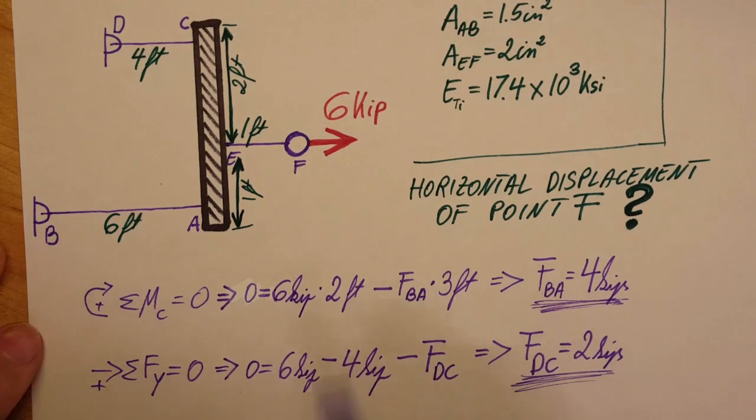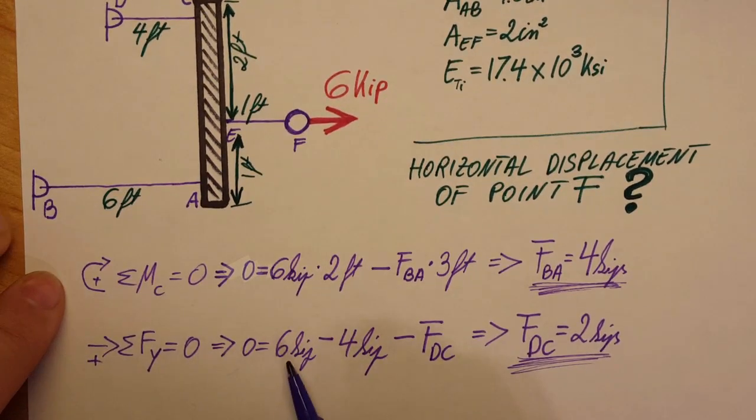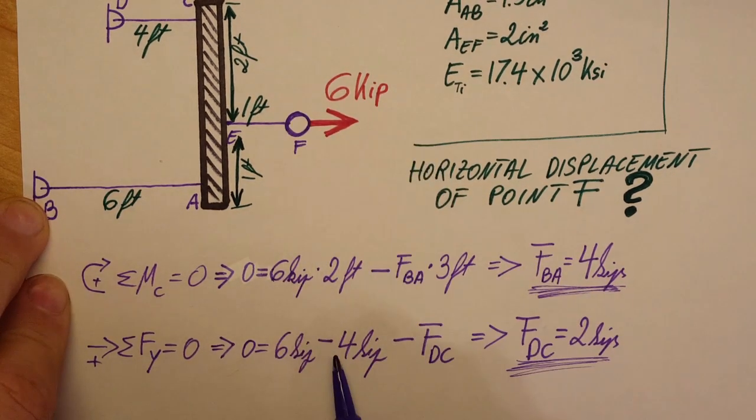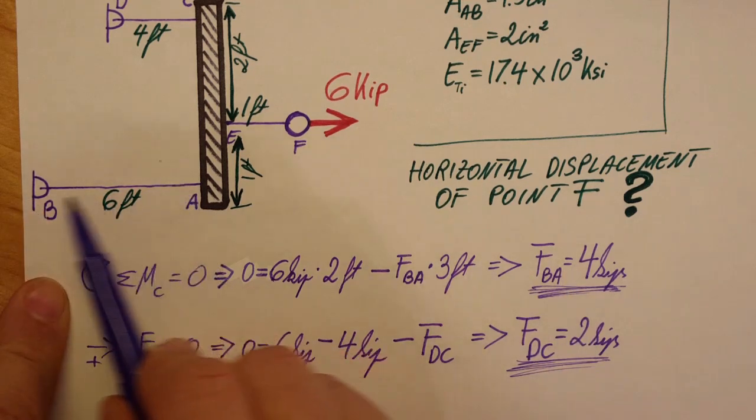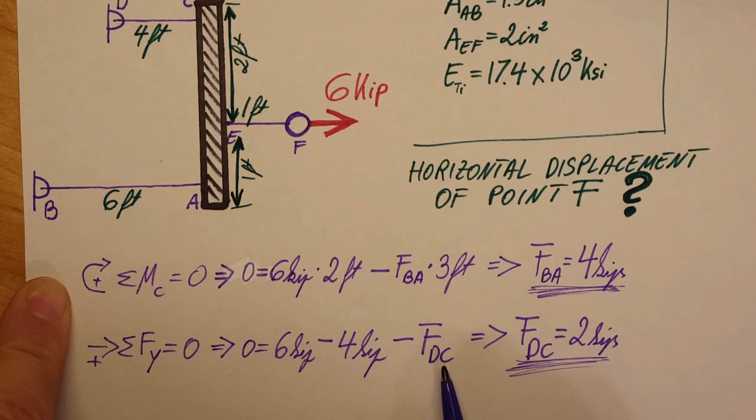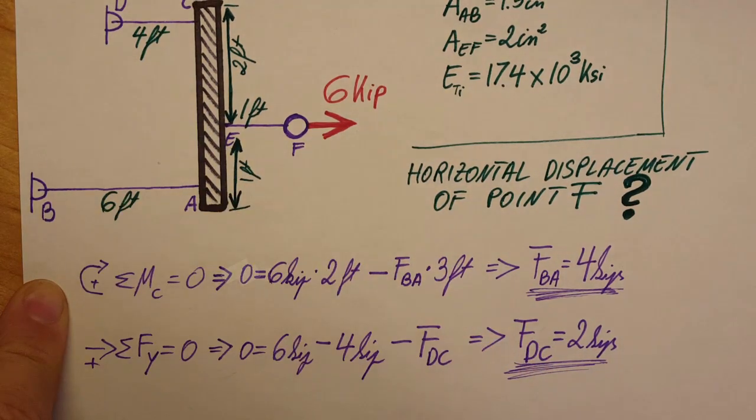Now we can switch to the sum of the forces in the y direction, and this will help us find the third force that we are missing. Six kips to the right, minus four kips going to the left, and minus force in rod DC which is also going to the left. From here, force DC we can find it as two kips.